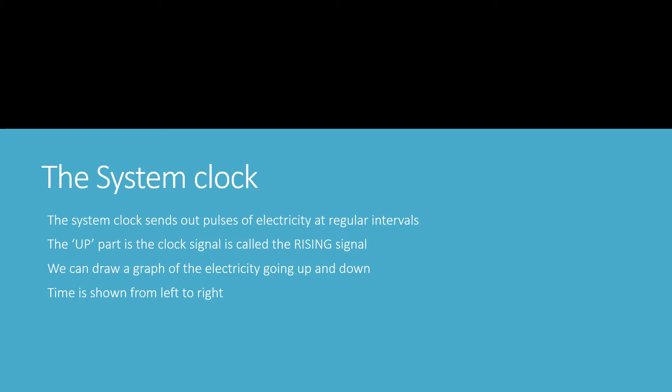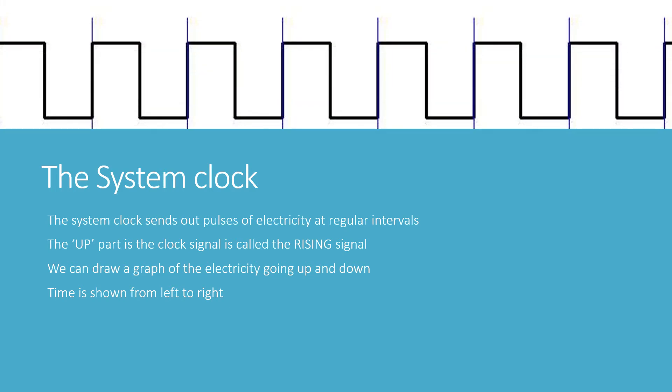The system clock sends out pulses of electricity at regular intervals. What I've called the tick, the signal from the clock, is the rising signal. It looks something like this. Time is shown from left to right and the up line is where the electricity pulses through the computer. And then the electricity dissipates and then another pulse comes from the system clock.